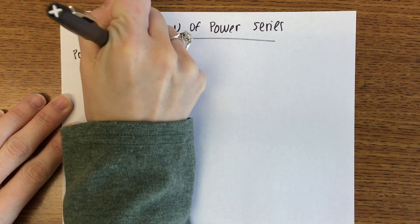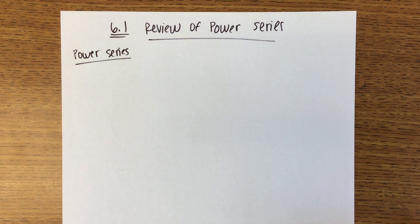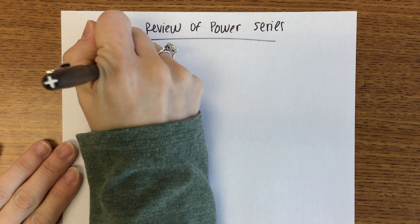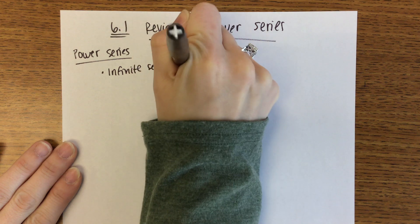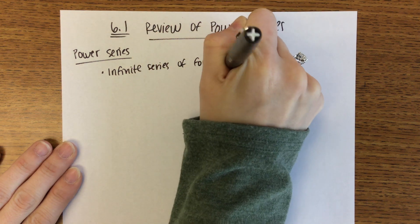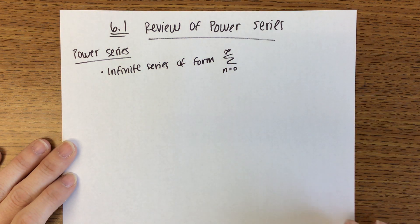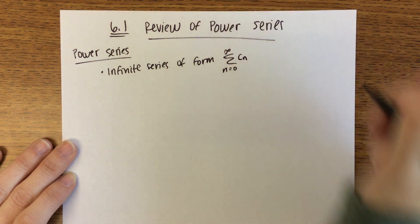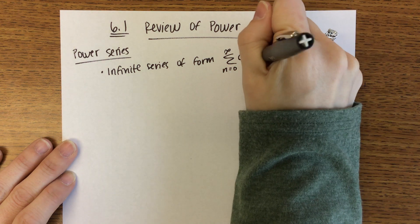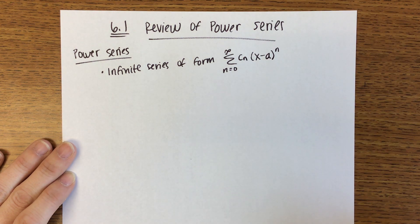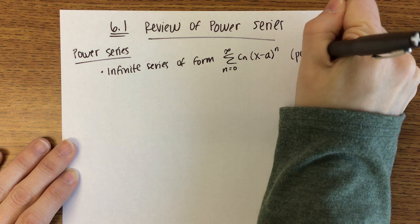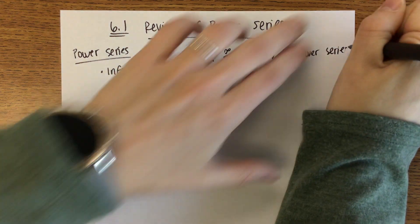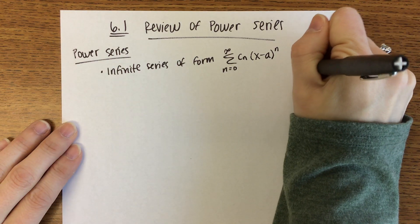Tomorrow's notes will cover solving differential equations using power series. The first thing to review is what a power series is. A power series is an infinite series of the following form: the summation from n equals 0 to infinity of some constant c_n times x minus a to the n power. This is called a power series centered at a.